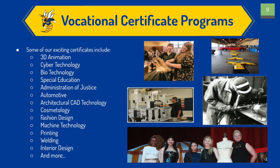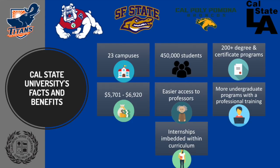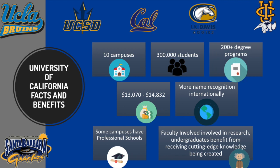We just discussed all the amazing vocational certificate programs that Fullerton College has to offer. We also want to highlight that Fullerton is ranked number one in transfer rates to CSUs. If planning to transfer, Cal State is an option — there are 23 campuses, they serve 450,000 students, and offer over 200 degrees and certificate programs. Cal States are known to embed internship opportunities within their curriculum. Another option are UCs — there are 10 UCs across California, serving over 300,000 students, and UCs are known to focus on research in their curriculum.